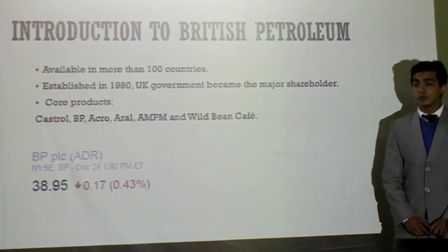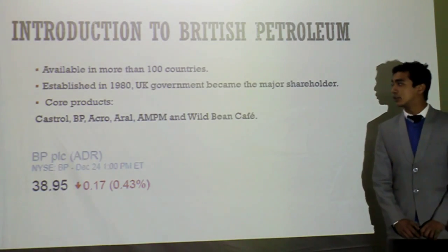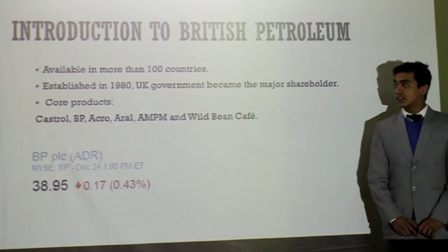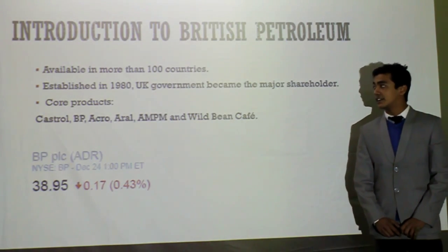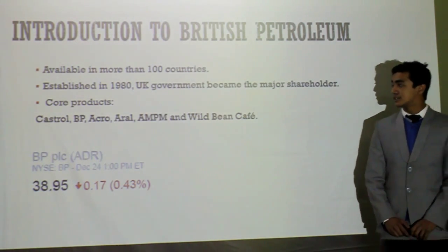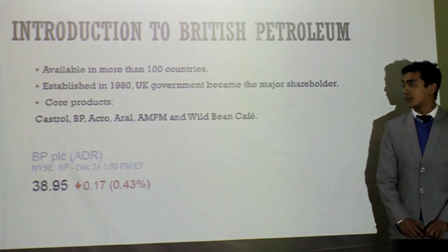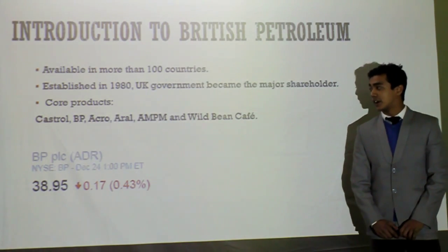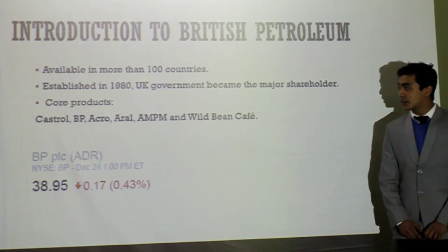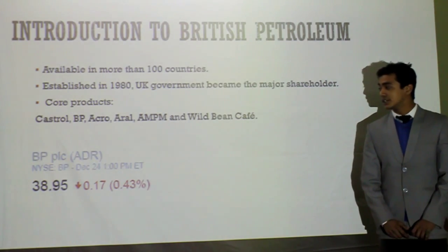Moving to our introduction to British Petroleum: available in more than 100 countries, established in the 1980s, the UK government became the major shareholder. Some core products of British Petroleum are cash flow, AM, PM, and Wild Beans.